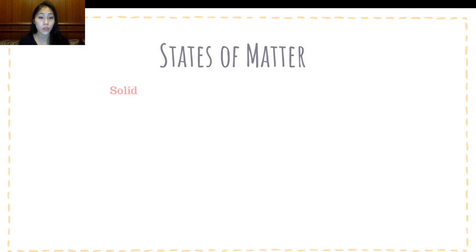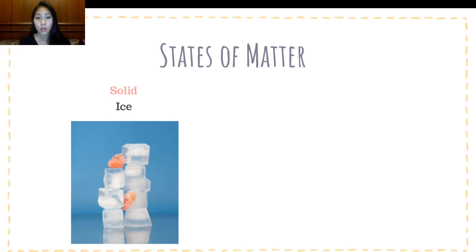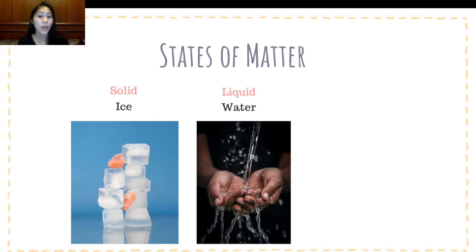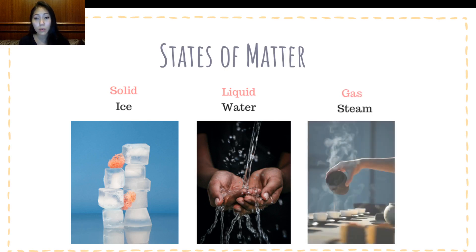The first state of matter is known as a solid. An example of a solid would be ice. The next state of matter is known as liquid. An example for a liquid state would be water. The final state of matter is a gaseous state, and an example of a gas would be steam.